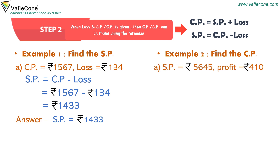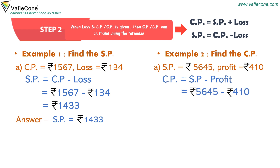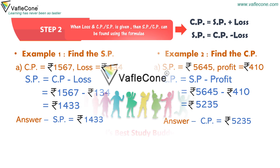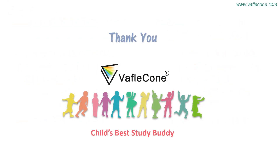One more example: find the cost price. Selling price equals rupees 5645, profit equals rupees 410. Cost price equals selling price minus profit, so rupees 5645 minus rupees 410 equals rupees 5235. Thank you.